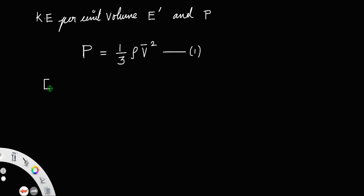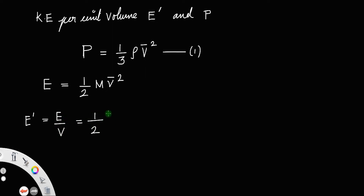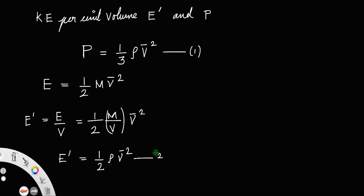We have kinetic energy E equal to (1/2)mv̄², where v̄ is the root mean square velocity and m is the mass of the gas. Then E', the kinetic energy per unit volume, will be energy divided by volume. This equals (1/2) times m/V times v̄², and since mass per unit volume is density, we get E' = (1/2)ρv̄². Let us call that equation number 2.